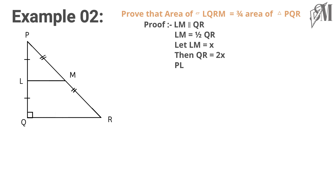To find the areas we need the perpendicular heights as well. We can see PQ is perpendicular to QR. So let's take PL and LQ equal to y. Now let's derive the areas.